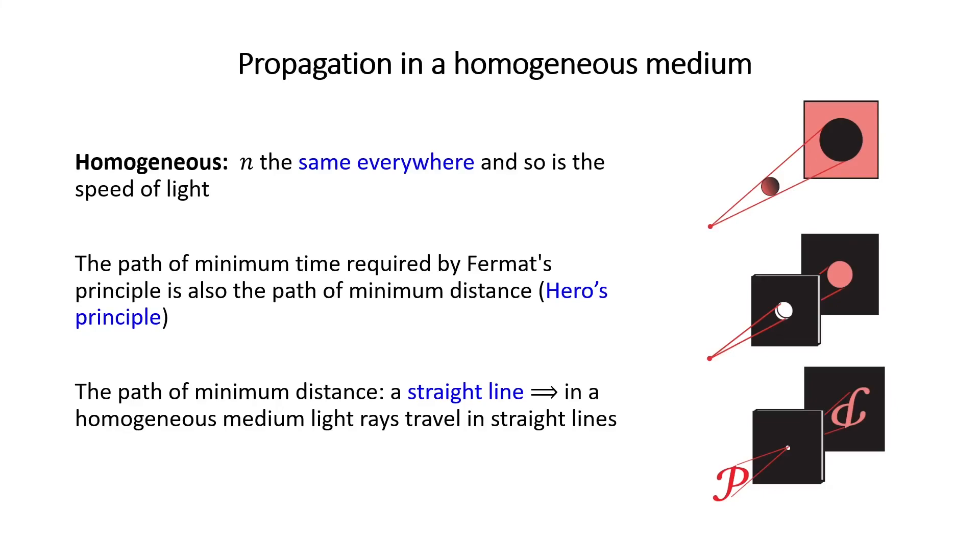For example, you can understand why the image of the last one is inverted. If you consider the top point of letter P and follow a straight line, you see that the image is this point, and if you consider the bottom point, the image is inverted, the image is here, and that shows why the image is inverted.